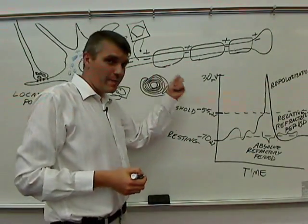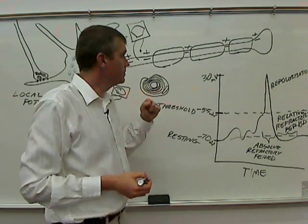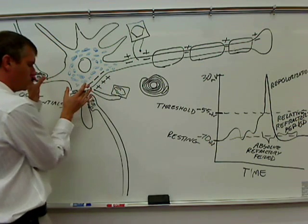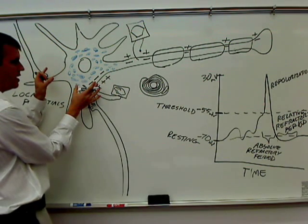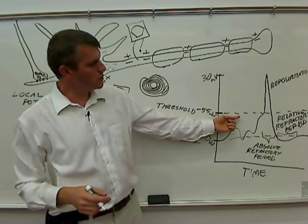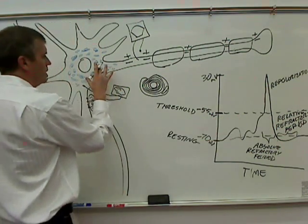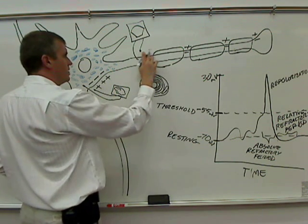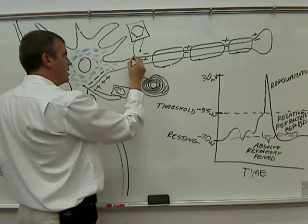Now, with a myelinated axon, the trigger zone, the local potentials, the graded potentials in the cell body and the dendrites, if they become positive enough again to reach threshold of minus 55, then again this area of the membrane will be triggered to become more positive on the inside and negative on the outside.